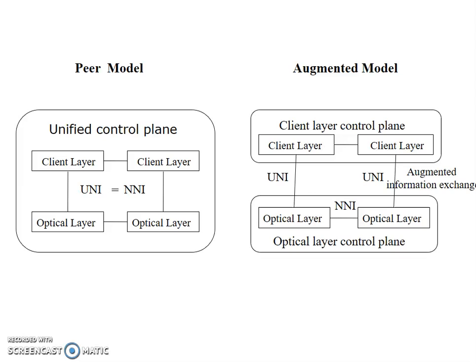The next is the peer model and the augmented model. In the peer model, a unified control plane is described, which communicates between the client layer and the optical layer. But in the augmented model, the client layer control plane communicates with the optical layer control plane with information exchange at a distance.